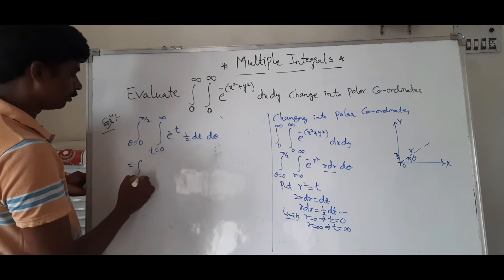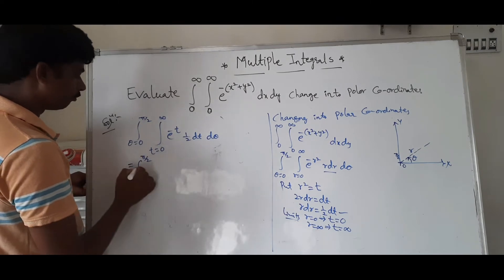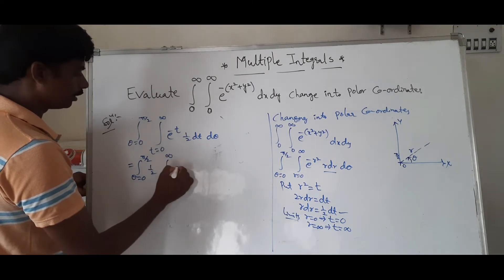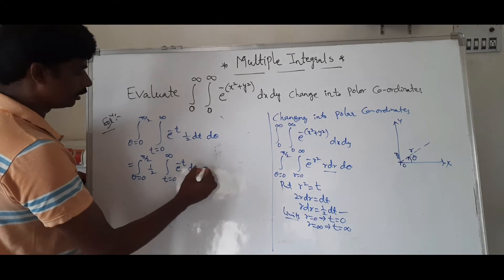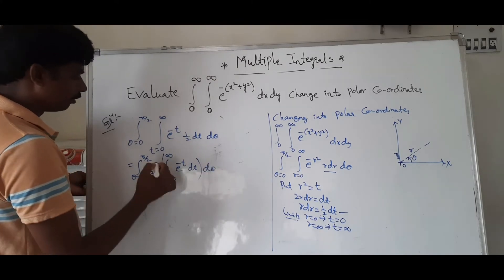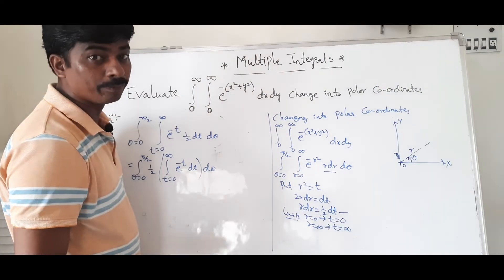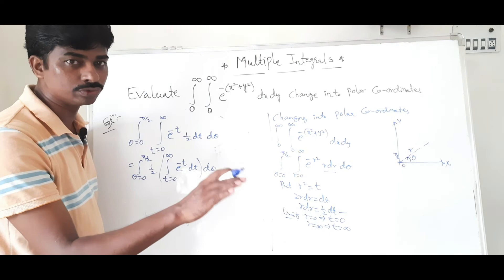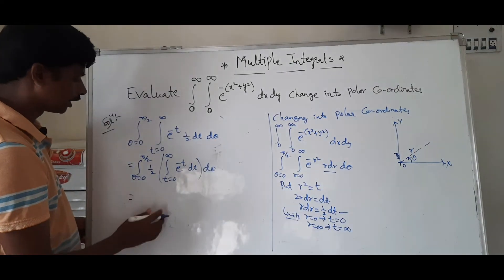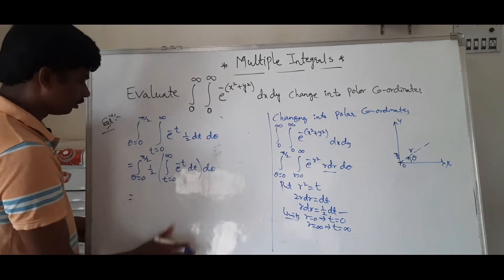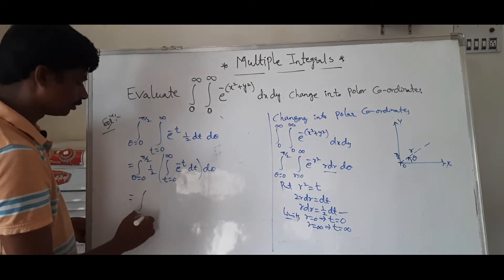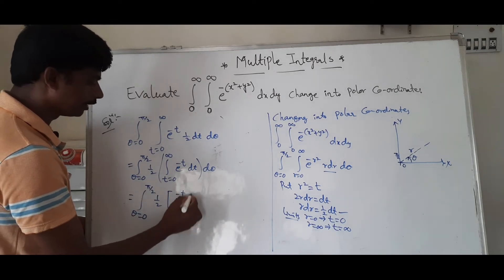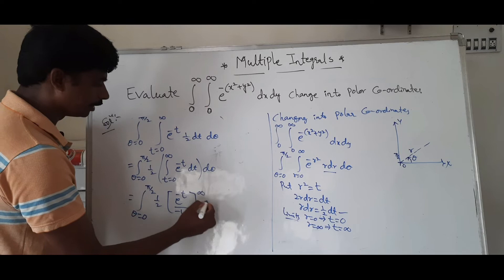Substituting, the integral becomes: integral θ = 0 to π/2, integral t = 0 to infinity of e to the power of minus t times (1/2) dt dθ. This simplifies to (1/2) times the integral from t = 0 to infinity of e^(−t) dt, times integral from θ = 0 to π/2 dθ. Integrating e^(−t) gives [e^(−t) / (−1)] from 0 to infinity.